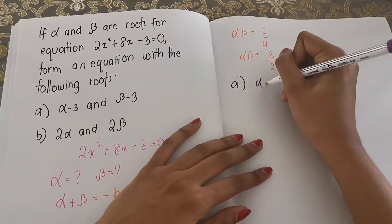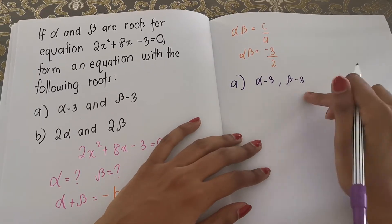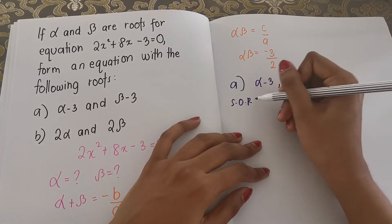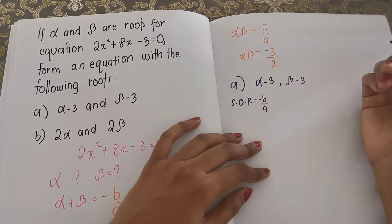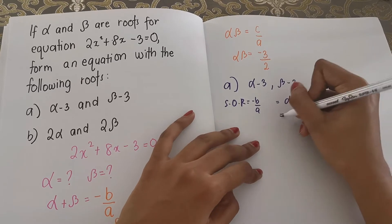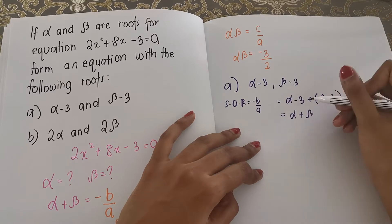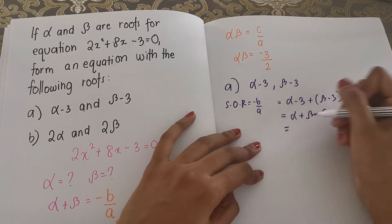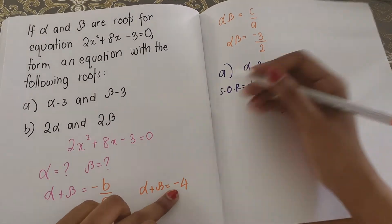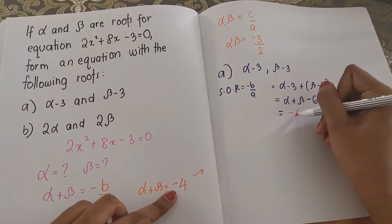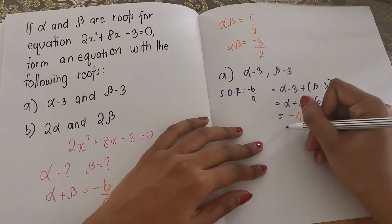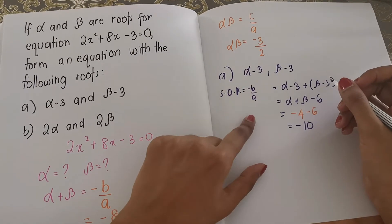For part A, the roots are alpha minus 3 and beta minus 3. We are going to form an equation for this. First, find the sum of roots, which is negative B over A. So (alpha − 3) + (beta − 3) equals alpha plus beta minus 6. We substitute alpha plus beta equals negative 4, so it becomes negative 4 minus 6, which is negative 10. So our sum of roots is negative 10.